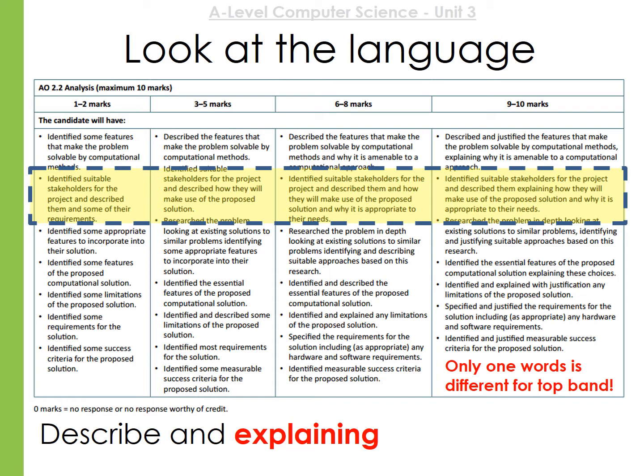Looking at the mark band again: for 9 to 10 marks, the different words are 'describe' and 'explain' — describe is 6 to 8 marks, and describe and explain is 9 to 10 marks. You should still be thinking about justifying your answers. You need to identify suitable stakeholders for the project, and describe and explain how they will make use of the proposed solution and why it's appropriate to their needs.